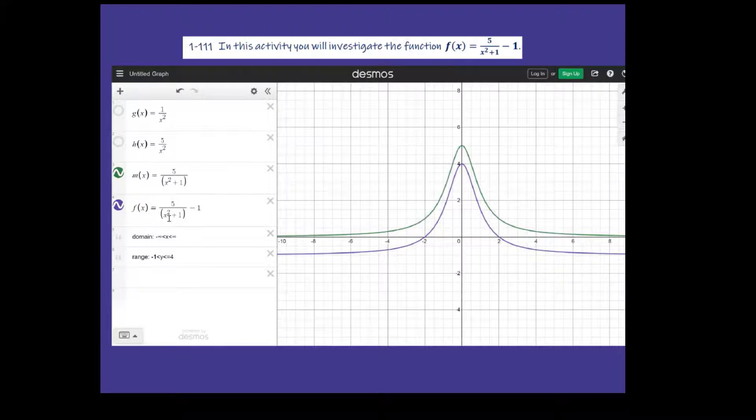Because if I put 0 in here, it's going to be 5 over 1, which is 5, minus 1, which is 4. It still has an asymptote, but now the asymptote isn't at 0. It's at negative 1.